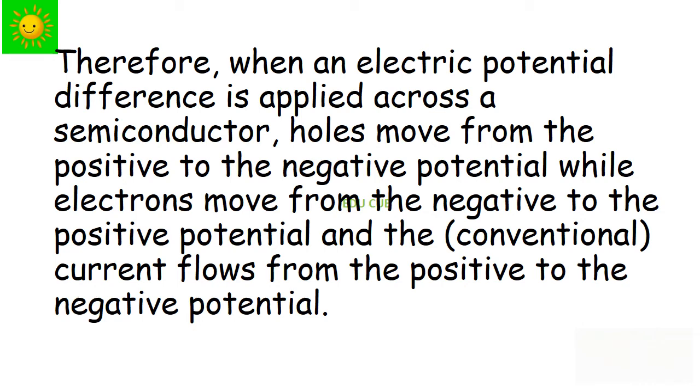Therefore, when an electric potential difference is applied across the semiconductor, holes move from the positive to the negative potential while electrons move from the negative to the positive potential, and the current flows from the positive to the negative potential.